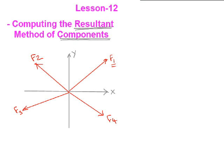You can see that this F1 is lying in the first quadrant, F2 is lying in the second quadrant, F3 is lying in the third, F4 is lying in the fourth quadrant. Let us also try to indicate the angles. Let us say this angle is theta 1, this angle is theta 2, this angle is theta 3, theta 4. You can see that I am showing all the angles with respect to x axis.